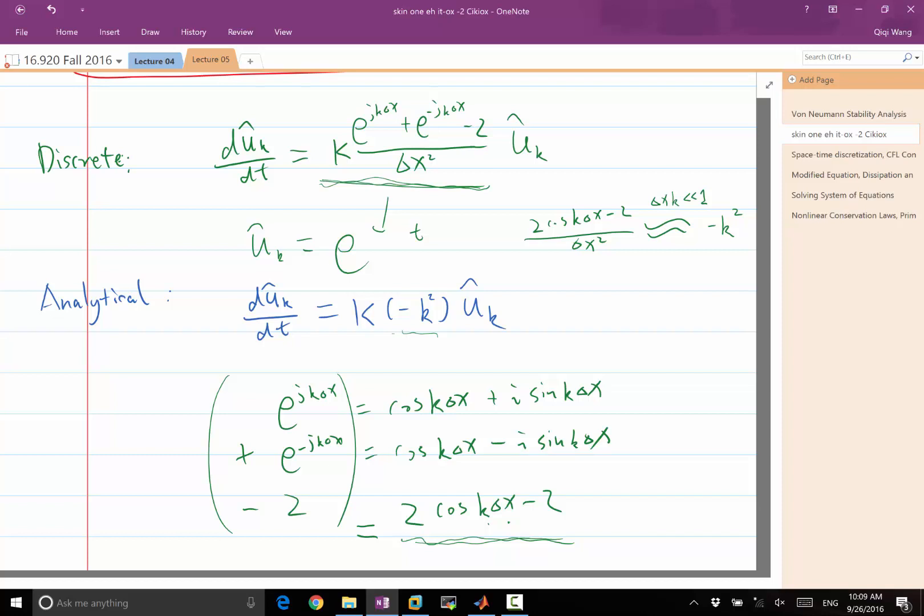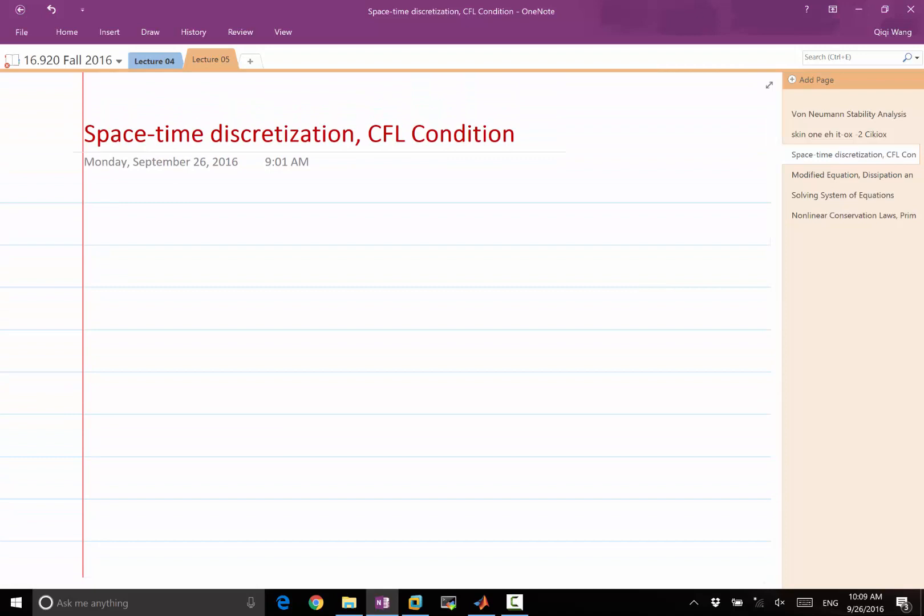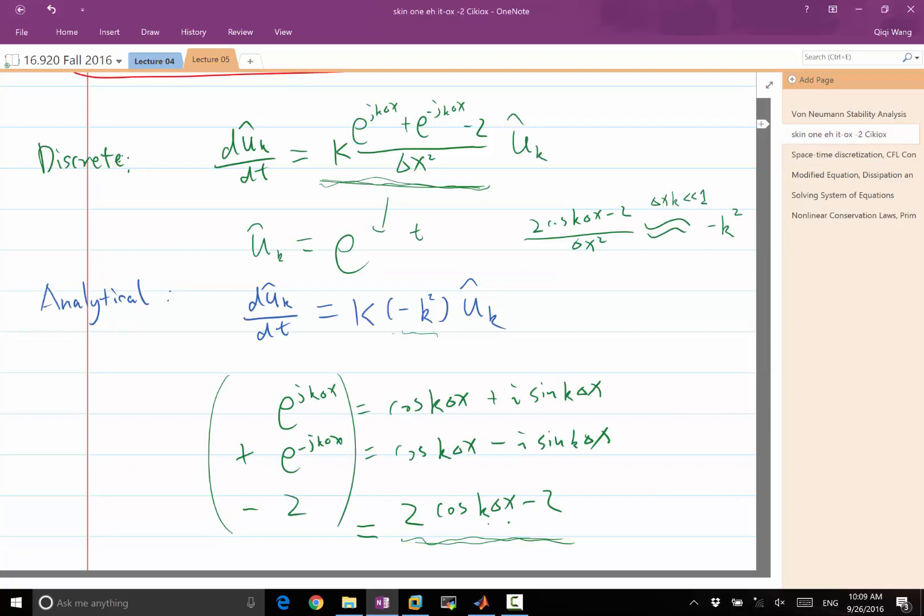So that's because ODE45 also doesn't know how to integrate things exactly. But if now we don't know how to integrate things exactly, we may not have a stable solution even with that good numerical scheme. Yes, question?